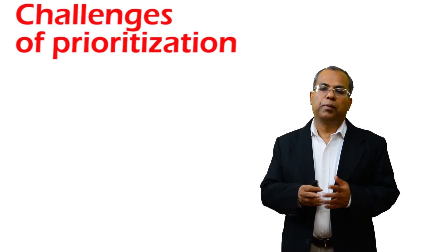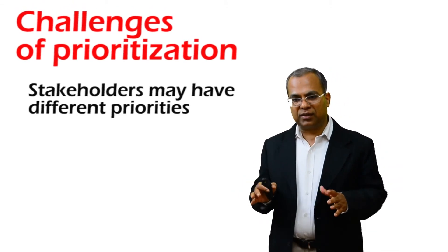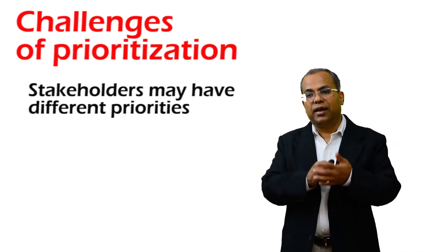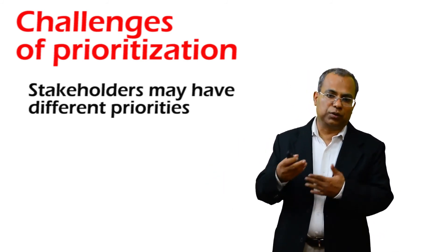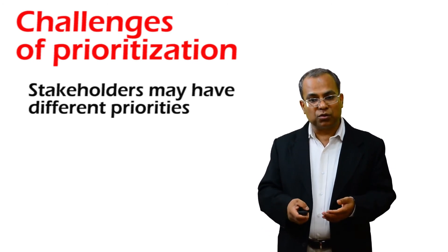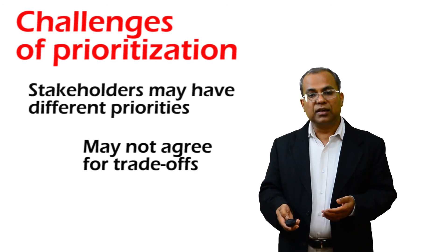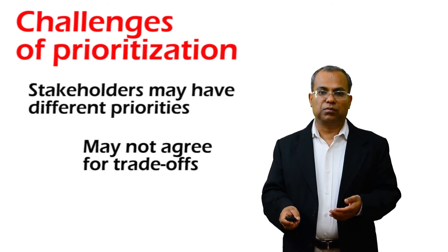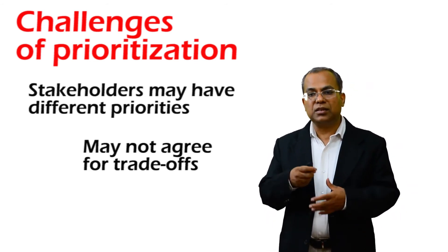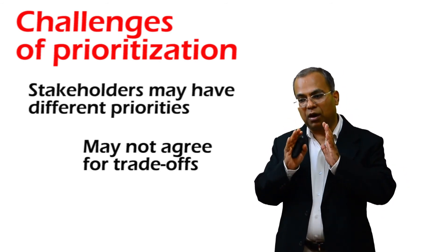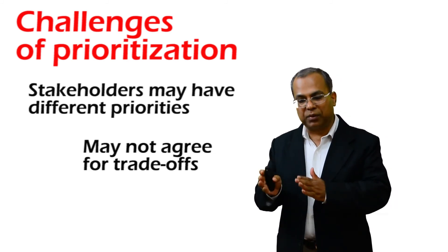The next element is the challenges of prioritization. Stakeholders may have different priorities, as each stakeholder comes with a background or need different from another. For example, a product owner may want to push a feature to market to gain market benefit, whereas the development manager may feel it's better to wait before going to market. We must observe the conflicts that exist and then prioritize requirements appropriately.